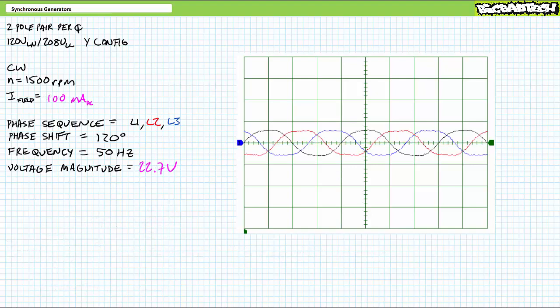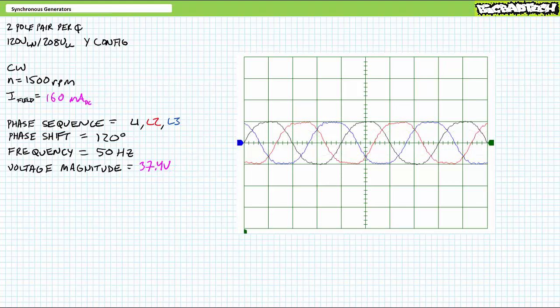Returning to the topic of this lecture, electrically excited synchronous generators, let's keep the prime mover turning at 1,500 RPM and crank up the DC field current to 100 milliampers. The induced voltage magnitude jumps to 22.7 volts and appears to have a frequency of 50 hertz. We increased field current and voltage only went up. When we keep the prime mover turning at 1,500 RPM and crank up the DC field excitation current to 160 milliampers, the induced voltage magnitude again jumps up, this time to 37.4 volts and frequency remains at 50 hertz. Again, we increased field current and again voltage went up. Thus far, induced voltage magnitude does indeed seem to increase as we increase field current.